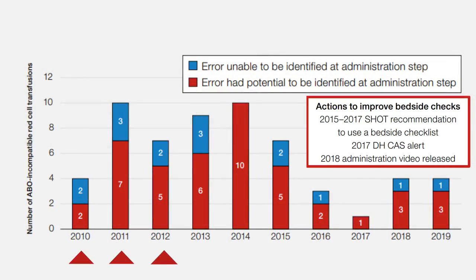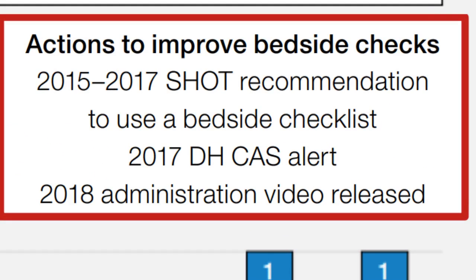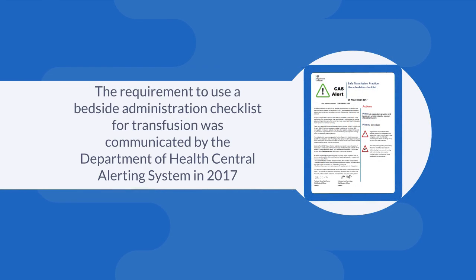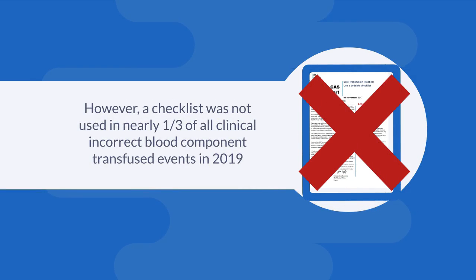We can also see that the majority of ABOI red cell transfusion errors could be picked up at the bedside with a bedside checklist. This has been a key SHOT recommendation for several years. The requirement to use the bedside administration checklist was communicated by the Department of Health Central Alerting System in 2017. However, a checklist was not used in nearly a third of all clinical incorrect blood component transfused events in 2019.